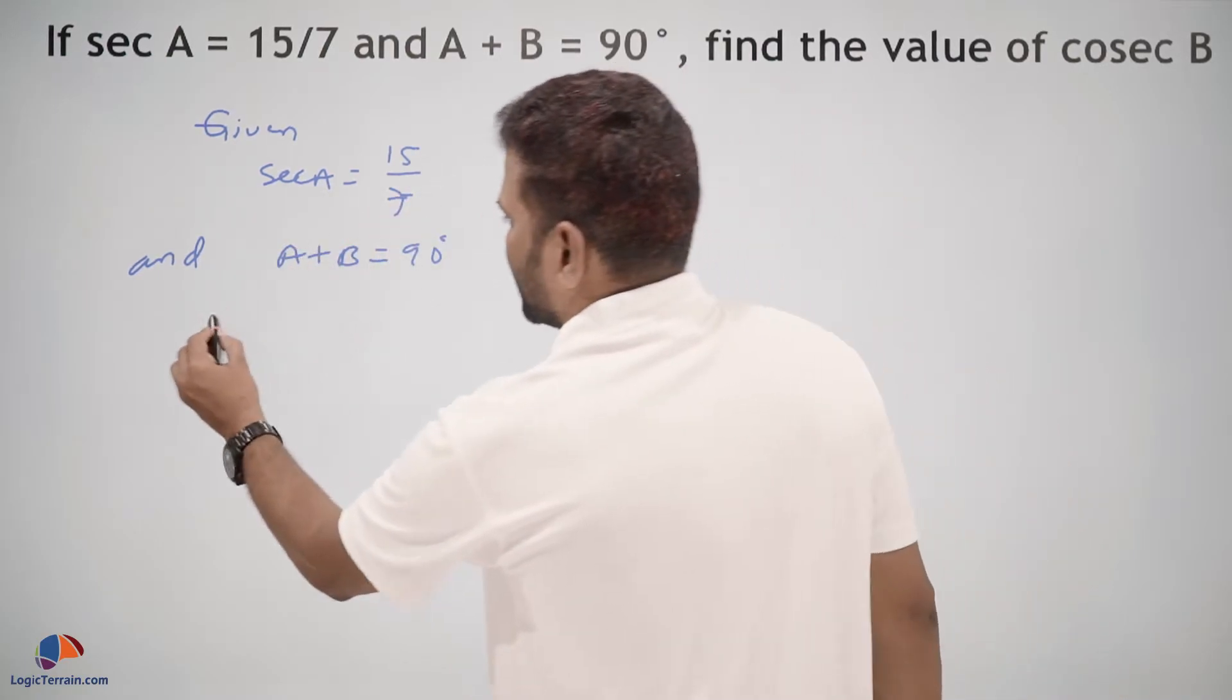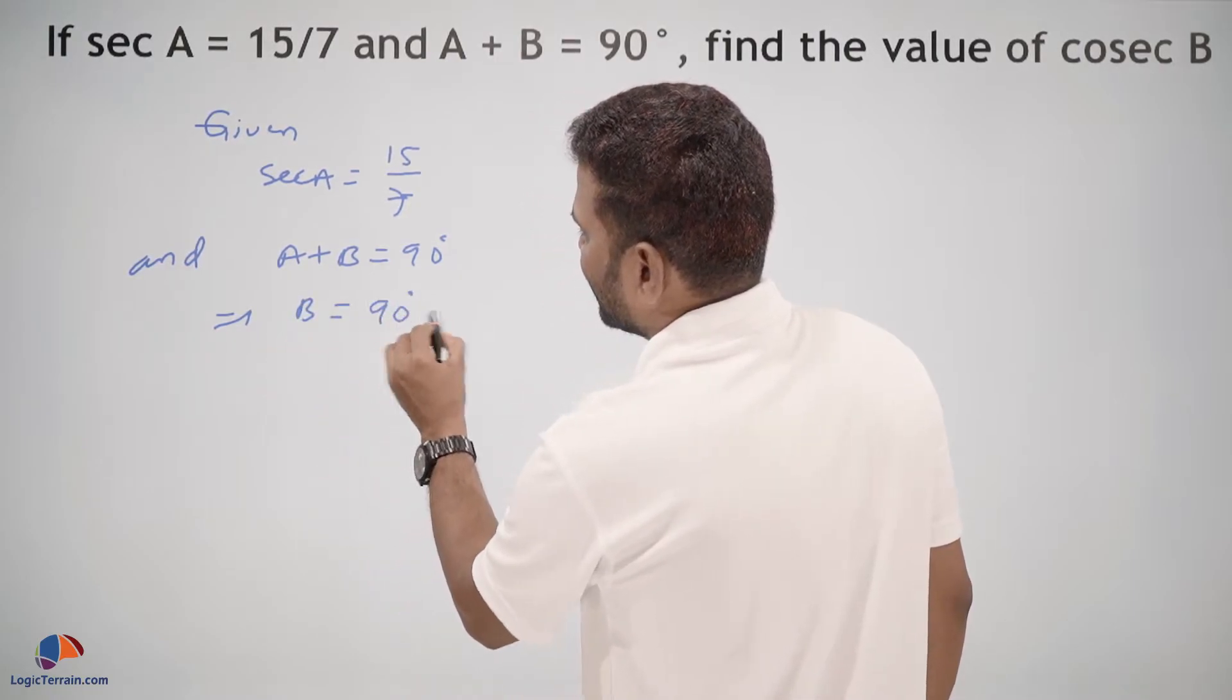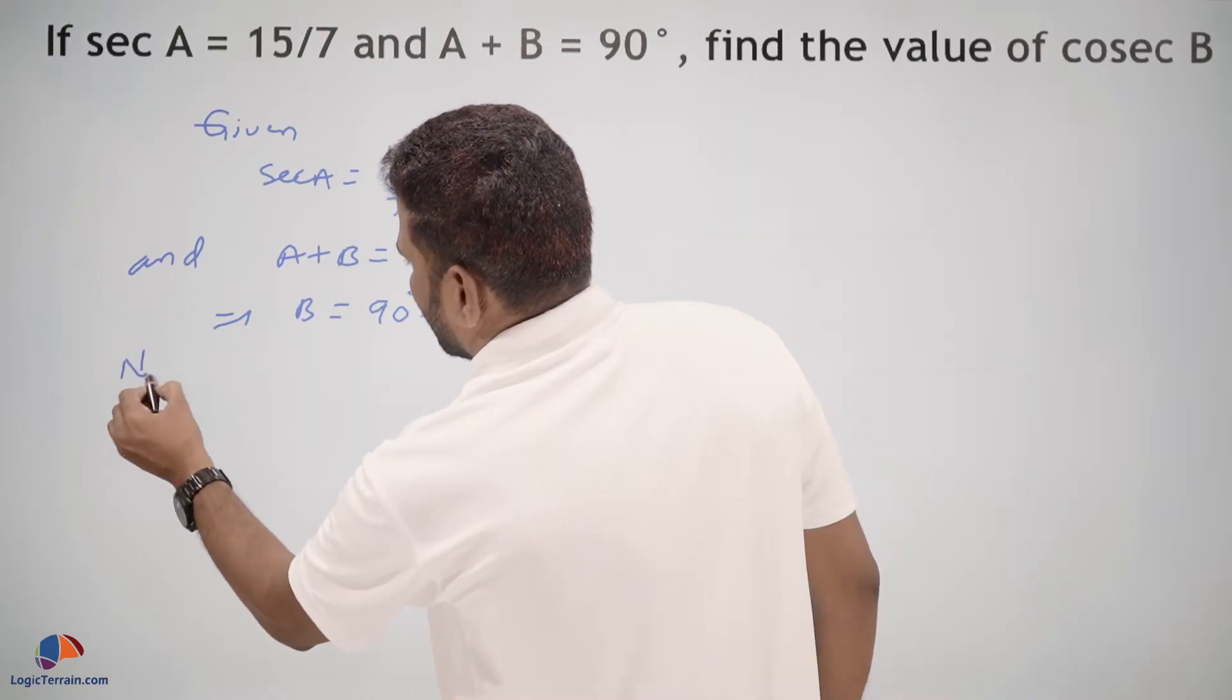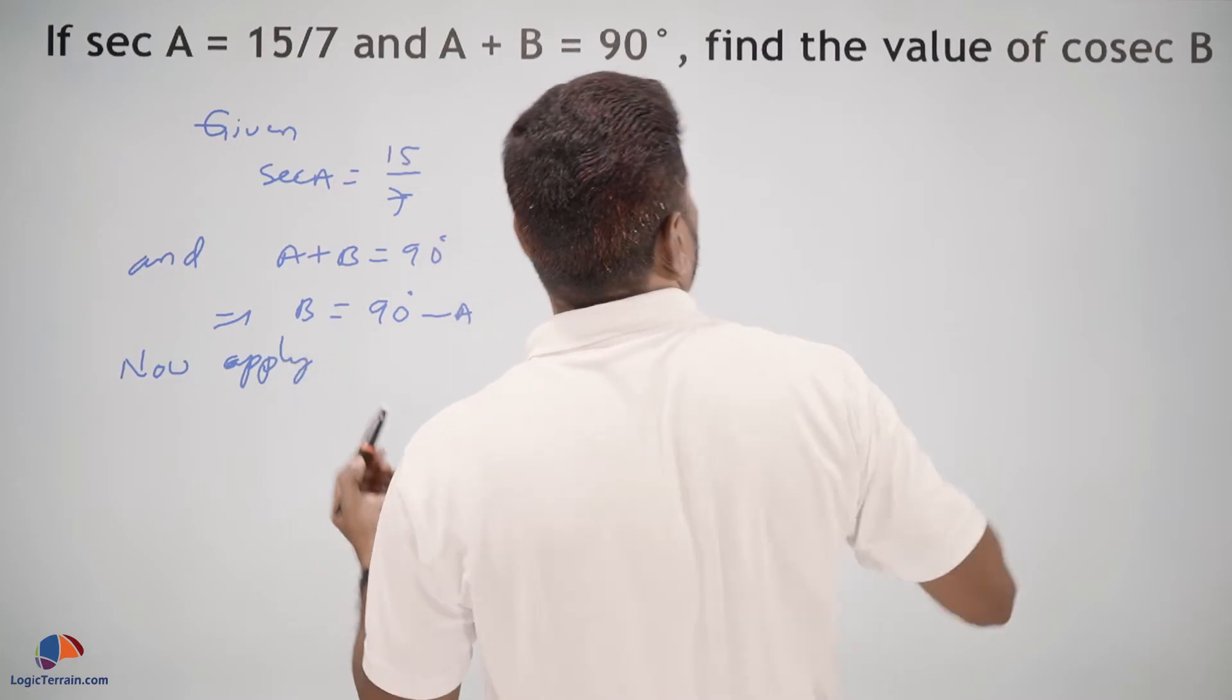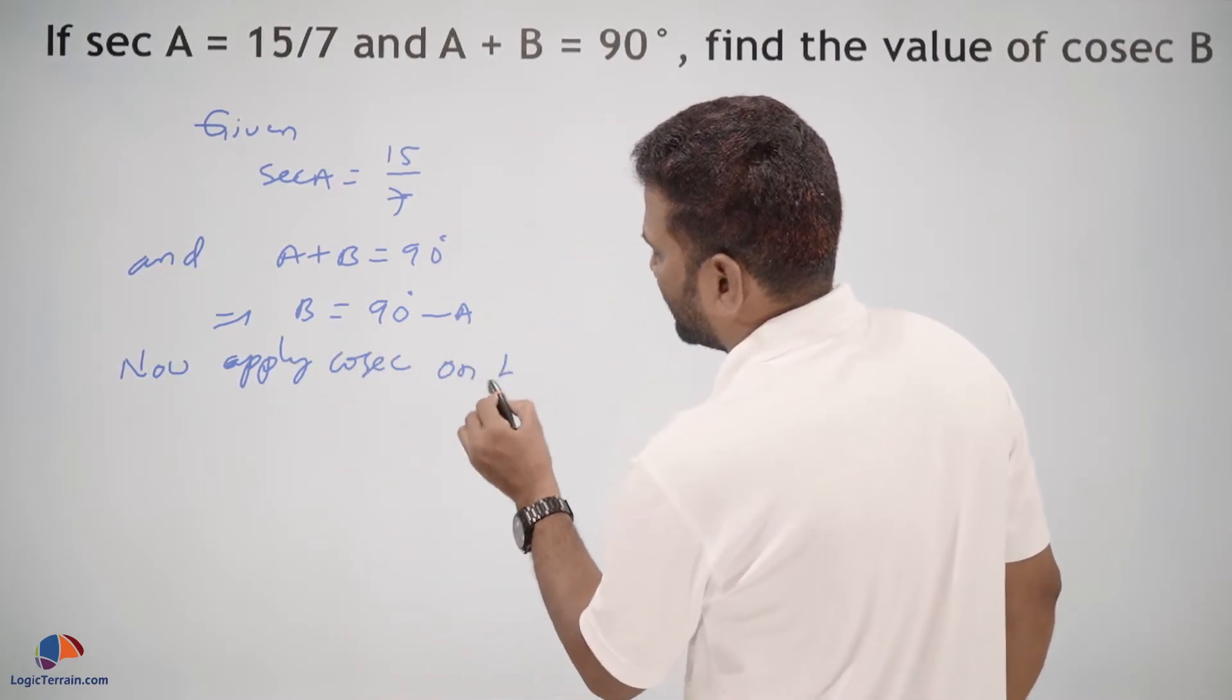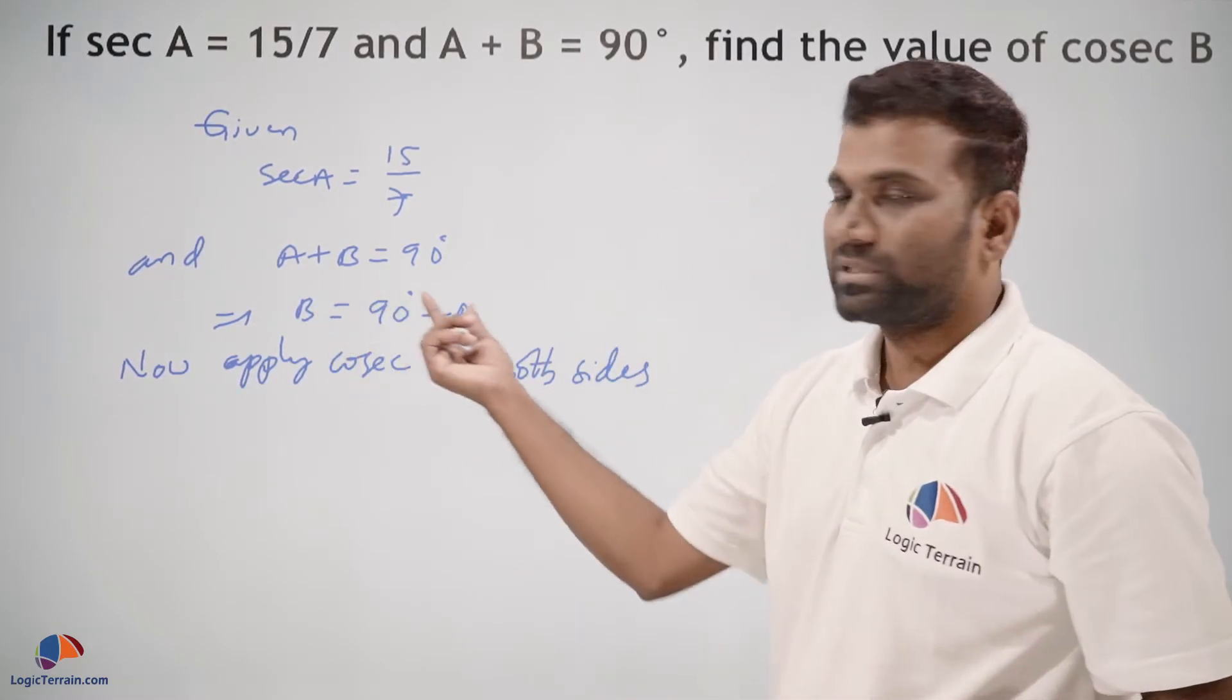Further, B = 90° - A. Now apply cosecant on both sides.